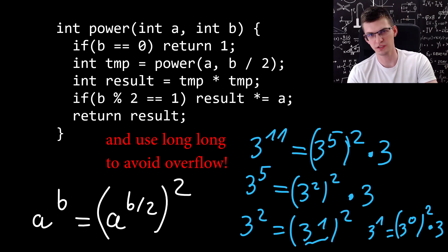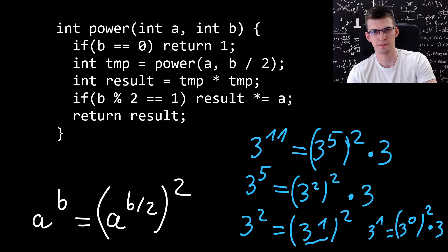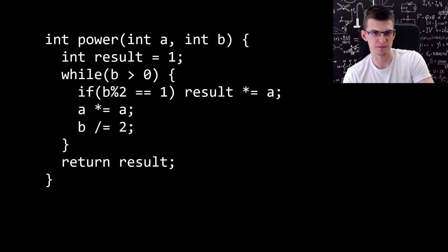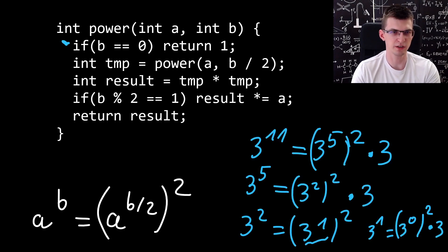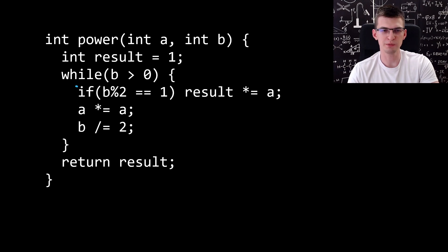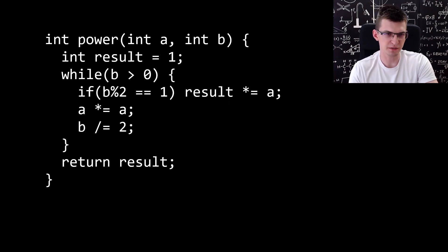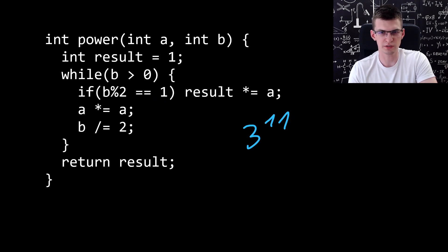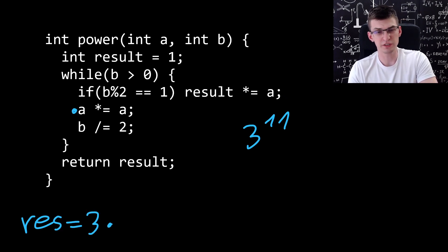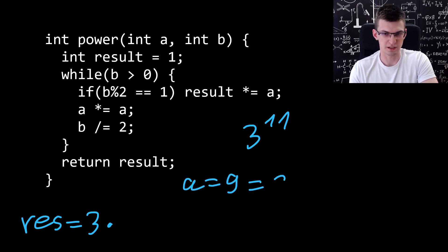While this recursive code is perfectly fine, I don't use it because iterative programs are faster than recursive ones. This is the iterative version of the same thing that I use during programming competitions. The loop finishes when b equals 0, same as the base case in the recursive version. While b is greater than 0, we update the result: if b is odd (b modulo 2 is 1), then multiply result by a. Otherwise, we multiply a by itself and divide b by 2. Let's trace this on the example of 3 to the 11th.